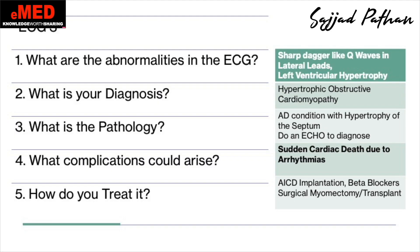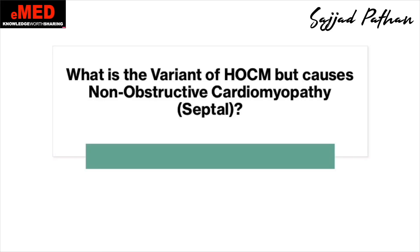This ECG is classical for hypertrophic obstructive cardiomyopathy — an autosomal dominant condition where there is hypertrophy of the septum near the left ventricular outflow tract. You need to do an echo for diagnosis. Sudden cardiac death can result due to arrhythmias. Treatment: beta blockers, but these patients need an automated implantable cardioverter defibrillator. If that doesn't work, some candidates will go for a surgical myomectomy or cardiac transplant. What is the variant of HOCM that is not obstructive? Put your answer in the comments.